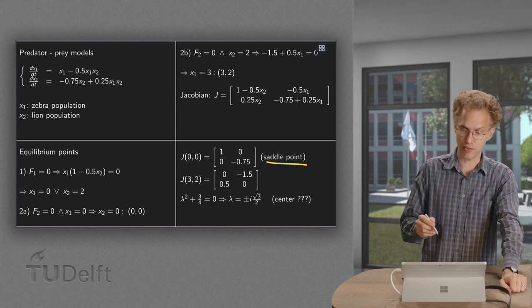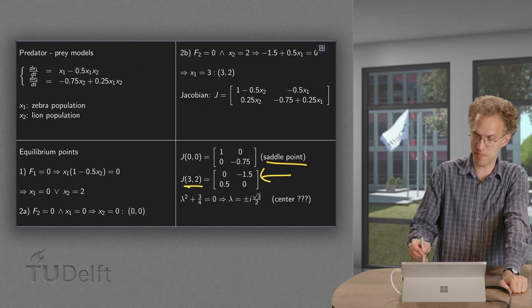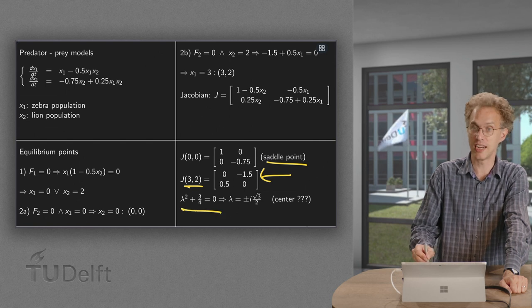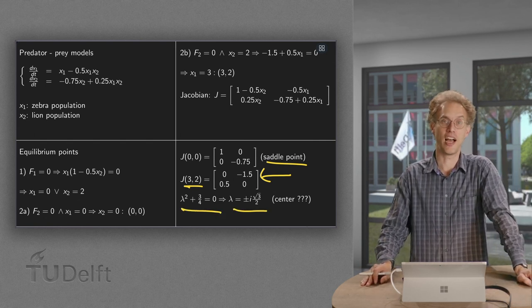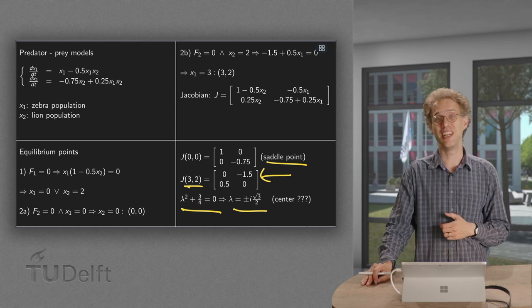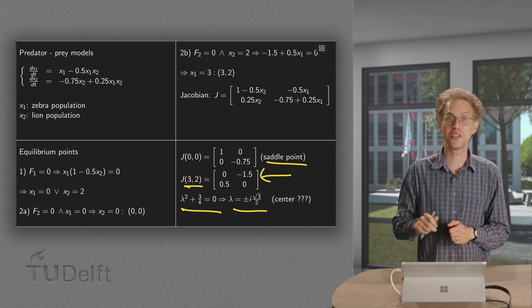What about the point (3, 2)? Plugging in those numbers, we get this Jacobian matrix. We compute the eigenvalues and we get fully imaginary eigenvalues. So linearly we get the center. So linearly we get some periodic behavior around the center.